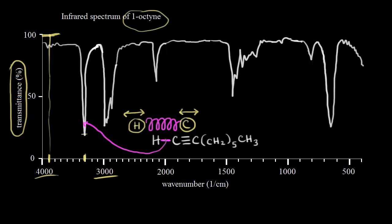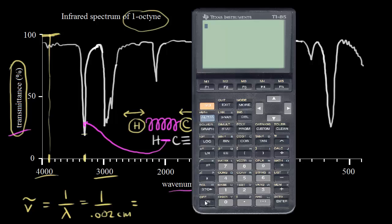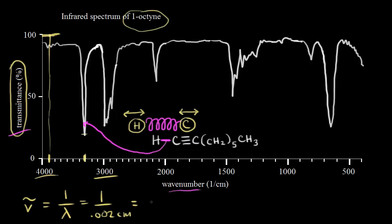Let's think about wave number. We just talked about percent transmittance; now let's see how wave number relates to the frequency and wavelength of light. The wave number is defined as one over the wavelength in centimeters. For example, if we had a wavelength of 0.002 centimeters, the wave number would be 1 divided by 0.002, which equals 500. The units are one over centimeters, or inverse centimeters. That's the wave number.